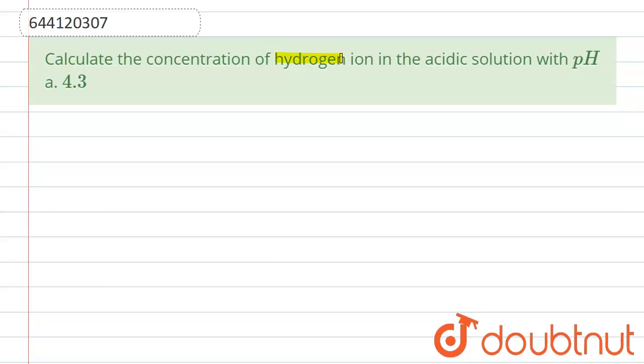Hello everyone, so the question is: calculate the concentration of hydrogen ion in acidic solution of pH. We have to calculate H+ ion concentration, and here we are having pH that is equal to 4.3. It is given and we have to calculate concentration of H+ ion.